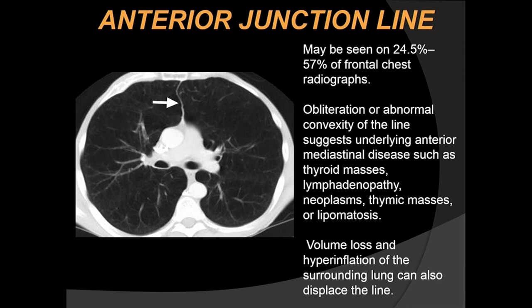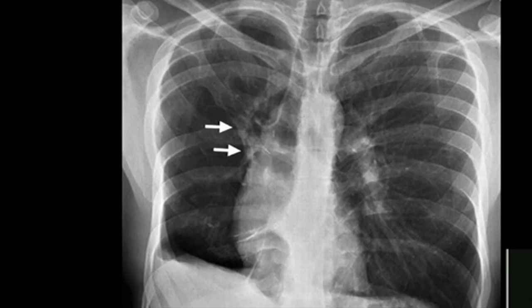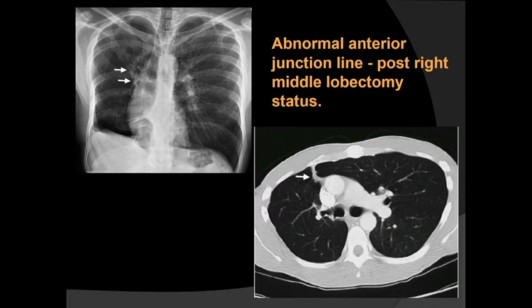The anterior junctional line is seen in almost 20 to 50 percent of frontal chest radiographs. If this line gets obliterated, it suggests anterior medial pathology requiring further investigation. Here the anterior junctional line has been displaced to the right in a post right middle lobectomy patient, in which there is also some volume loss in the right lung.